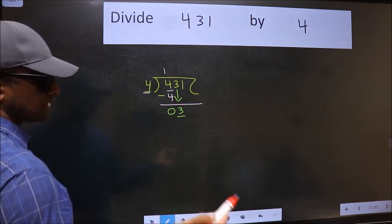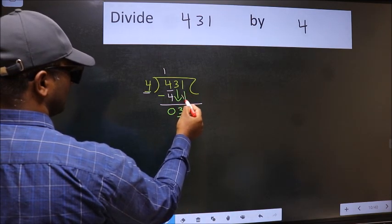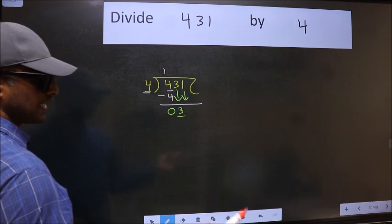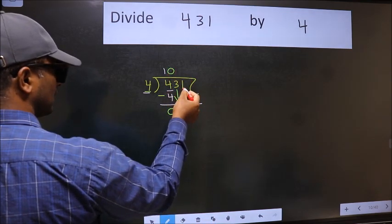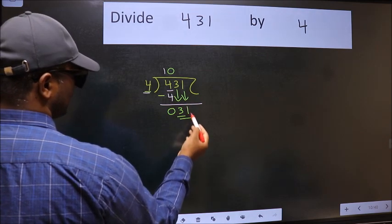So, we should bring down the second number. And the rule to bring down the second number is we should put 0 here. Then only we can bring this number down. Now, 31.